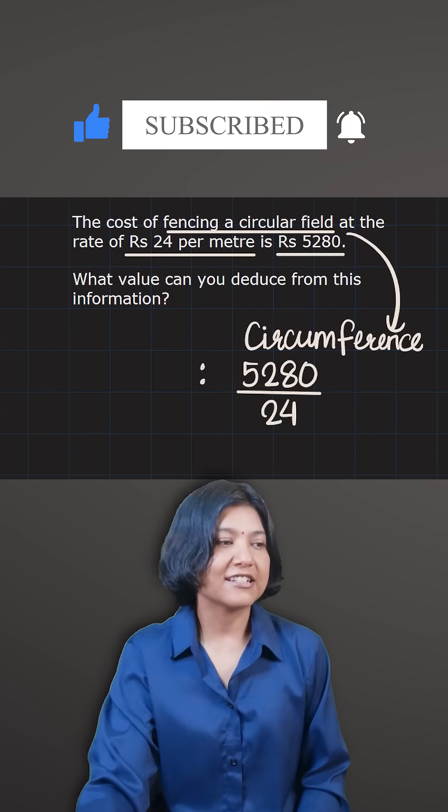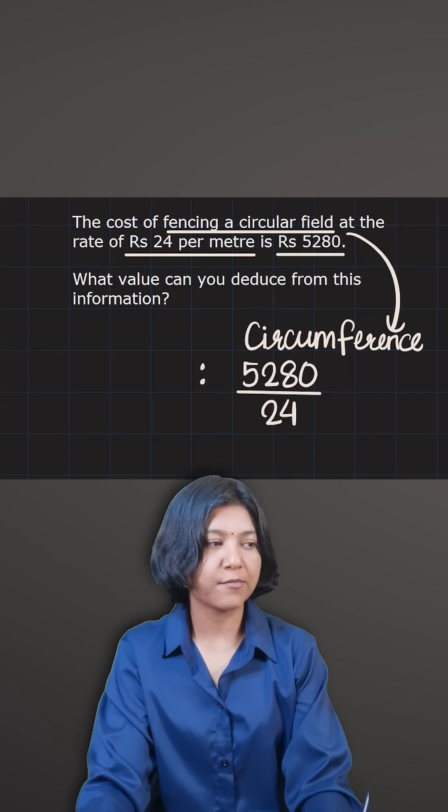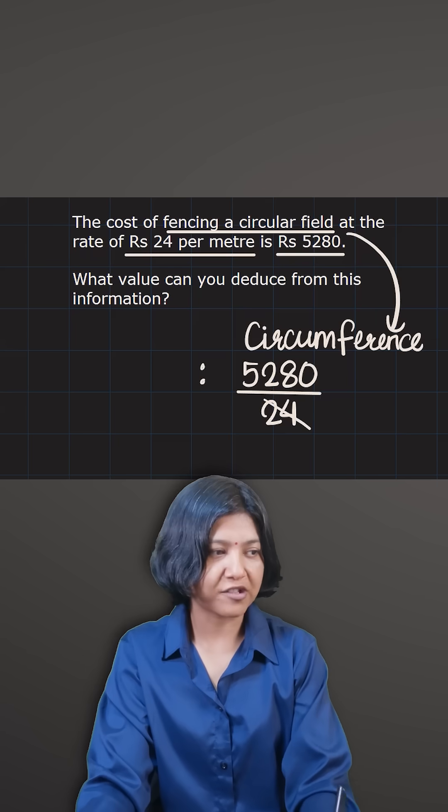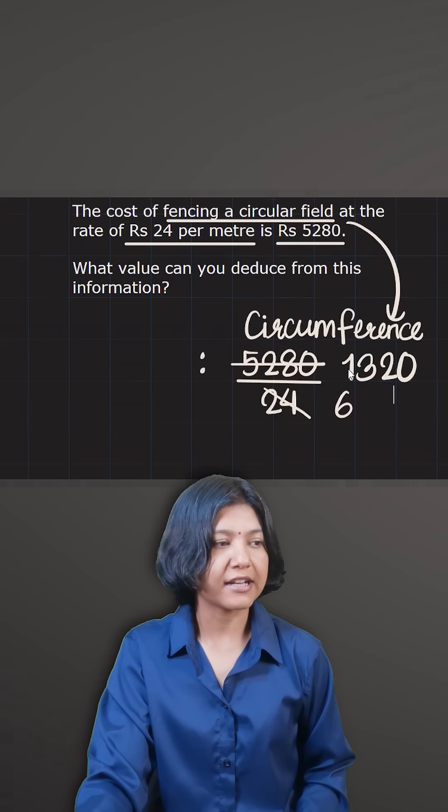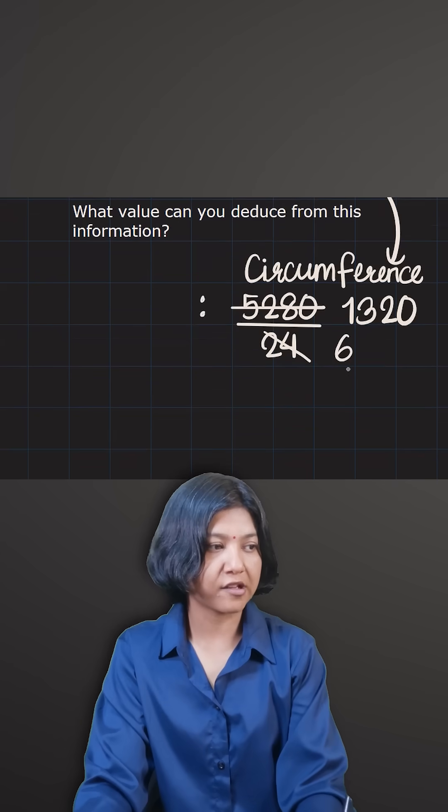So upon dividing, what do we do? We get the circumference. And let's find the circumference here. You can divide both numbers by four. Four into six is 24, four into 13 is 52, four twos are eight and zero.